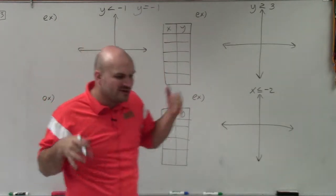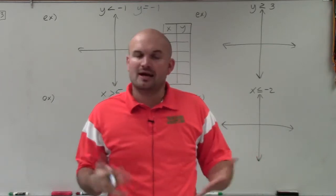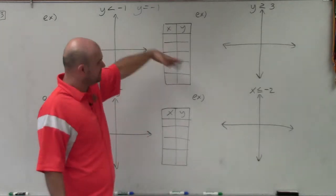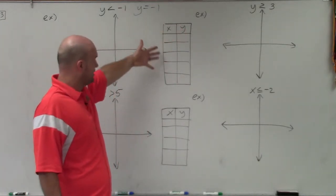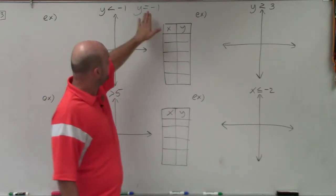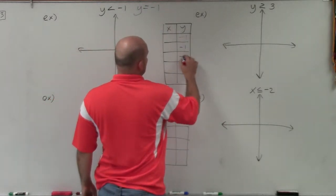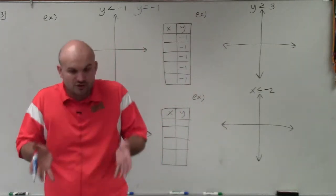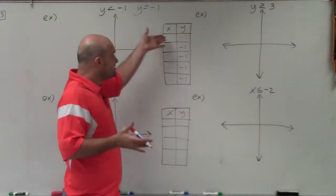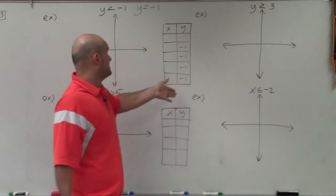When you first learn to graph, the first thing we did was plot points in a table. We created values for x and y. So here I have a table, and I'm going to use it to demonstrate how to graph y equals negative 1. In this equation, we don't have anything for x — the only thing we know is y equals negative 1. So if I create a table of values, y is always equal to negative 1. As for the values of x, it doesn't really matter — I can plug in any number.